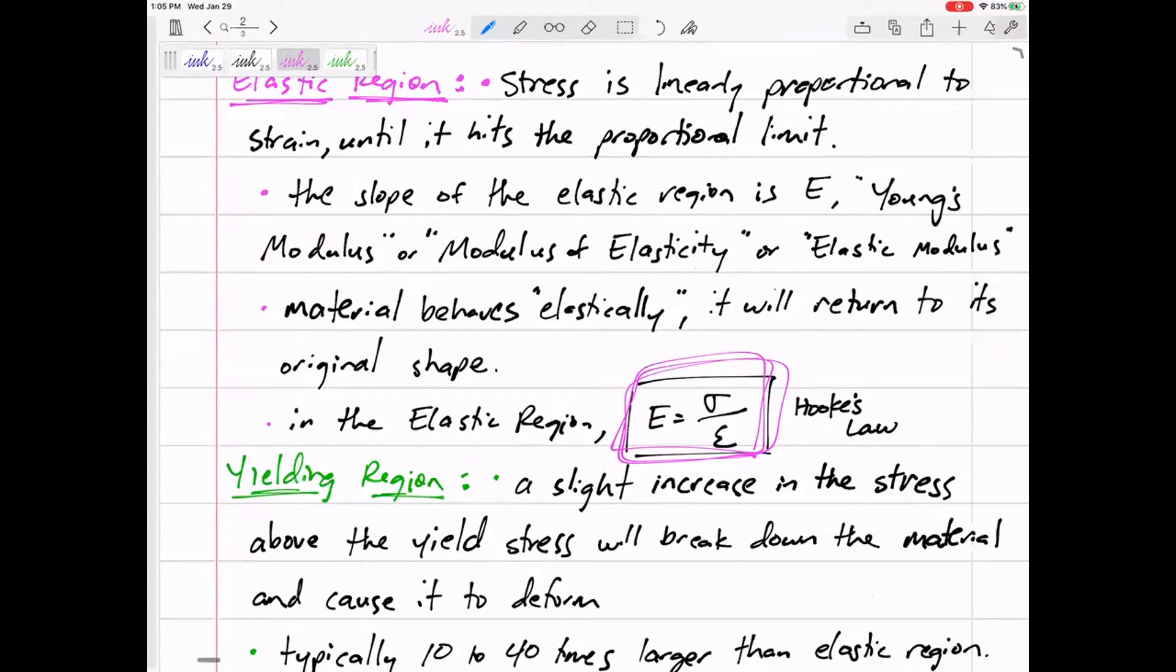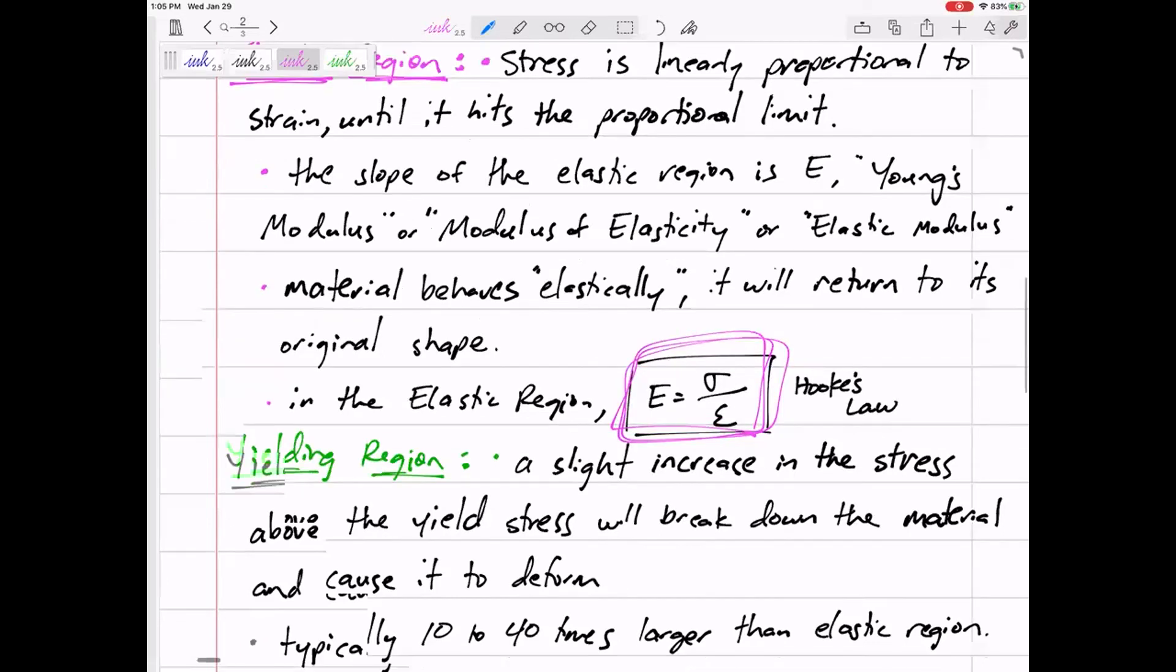But I can't emphasize that enough: only in the elastic region, E is stress over strain. What does that mean? That means if you know two out of three, you can solve for the third. So if you know the material's E and maybe you know how much it's being stretched—maybe you know the strain—then you can find the stress, if it's in the elastic region.